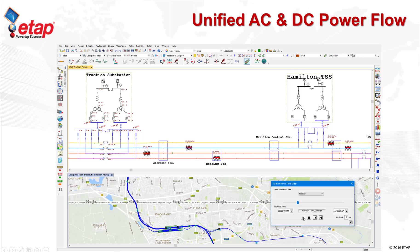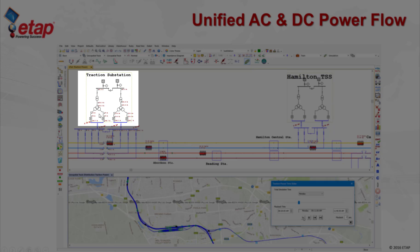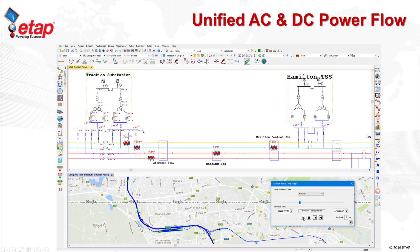Using eTrax, we can model the rail power system using a geospatial representation as well as a schematic one-line diagram. The schematic one-line diagram includes modeling of AC and DC power networks together. The AC power system is shown in black, and the DC power system is shown after the rectifier in blue. The railway power system network, or traction power system, is connected to various train routes, which are shown with different color codes.